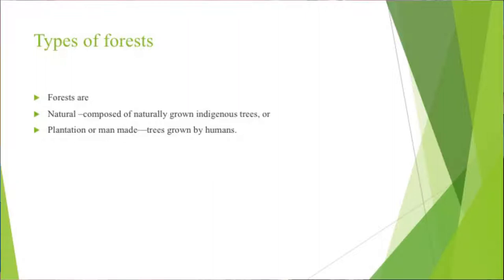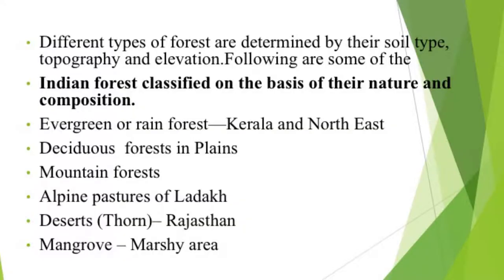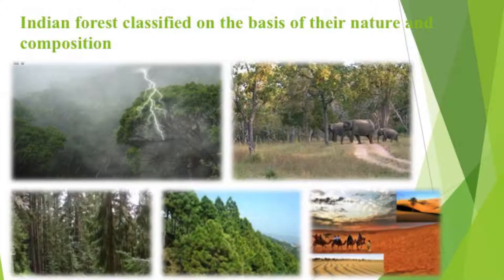Forests can be natural — composed of naturally grown indigenous trees — or plantation, which are manmade forests grown by humans. Different types of forests are determined by soil type, topography, and elevation. Indian forests classified by nature and composition include: evergreen or rain forests in Kerala and the Northeast, deciduous forests in the plains, mountain forests, alpine forests of Ladakh, thorn or desert forests as in Rajasthan, and mangrove forests in marshy areas.